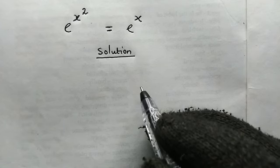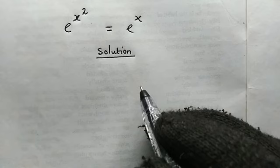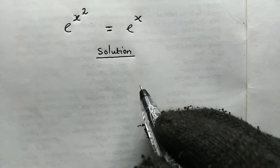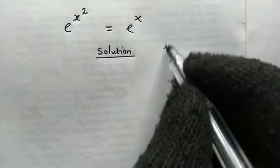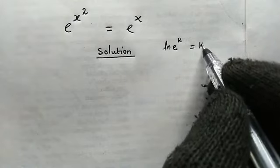We have e to the power of x squared, this is equal to e to the power of x. Now the first thing to do is to take ln of both sides of this equation, using the idea that the ln of e to any power is equal to that power.